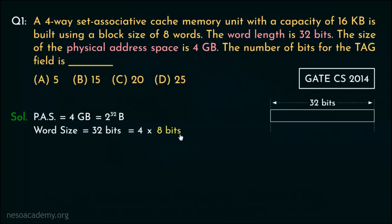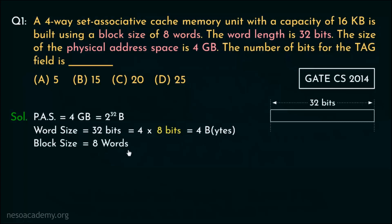Coming to the word length, it is given as 32 bits, which is 4 multiplied by 8 bits, and 8 bits is 1 byte. Therefore the word size is 4 bytes. The block size is given as 8 words, and one word is 4 bytes. So 8 words equals 2 cubed times 4 bytes, which is 2 to the power 5 bytes. Therefore, 5 bits will be used for the block or line offset.